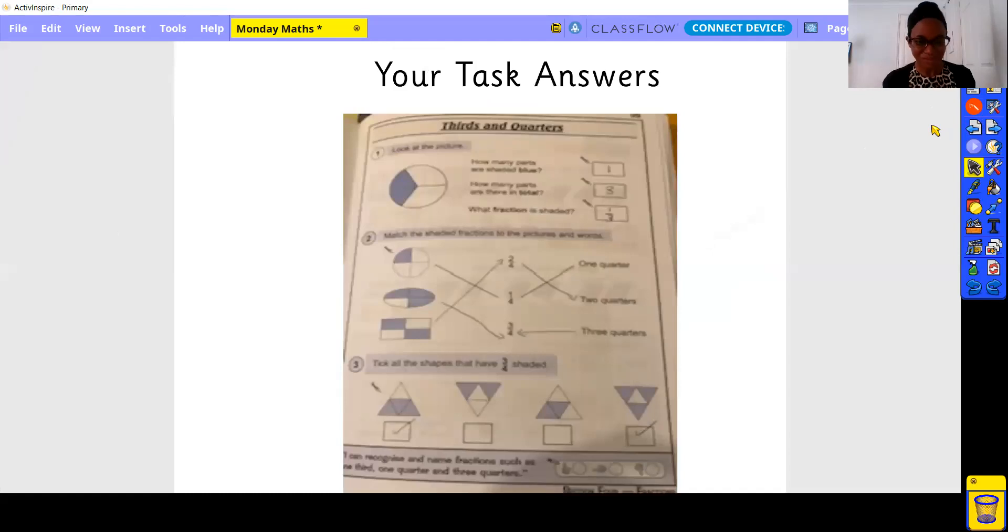I'm back. So here are your answers. We had one part was shaded blue. There are three parts in total, and the fraction is one third. One third is shaded. Here we have two quarters, and here we have three quarters. And you should tick here and here. Good stuff.